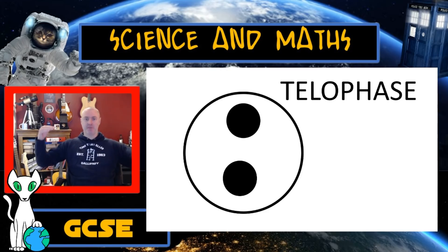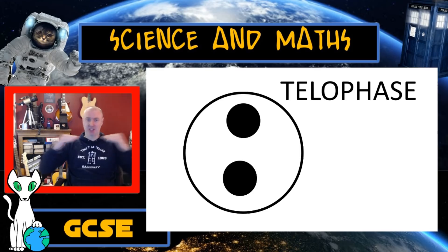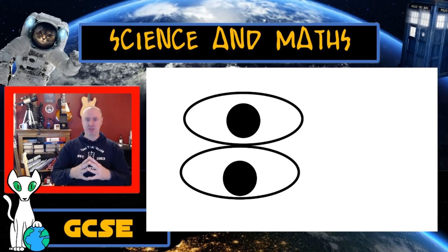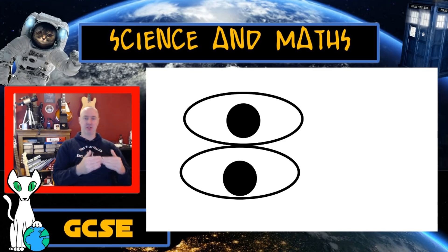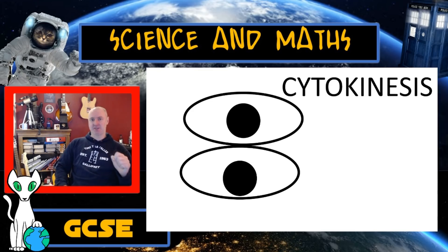So the cell membrane helps us by pinching in the middle, a little bit like this. It pinches inwards. And when it pinches all the way, that causes a cell to literally physically split into two cells. We call that process cytokinesis.